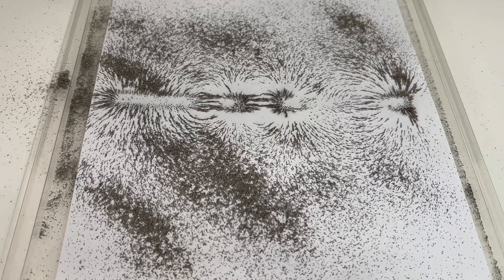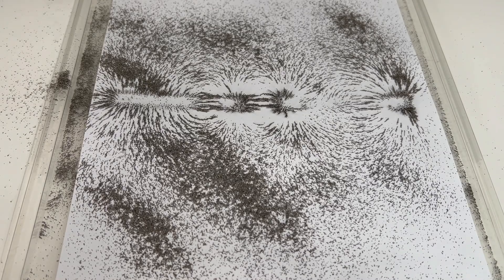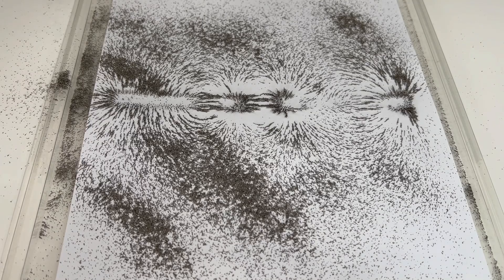This simple experiment helps us see magnetic fields, something we can't usually see with the naked eye. You can try this at home or in class using just a magnet, some paper and iron filings.